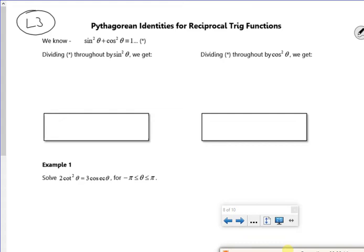Right, so we know so far you've got tan is sine over cos, you've got sine squared plus cos squared is 1.